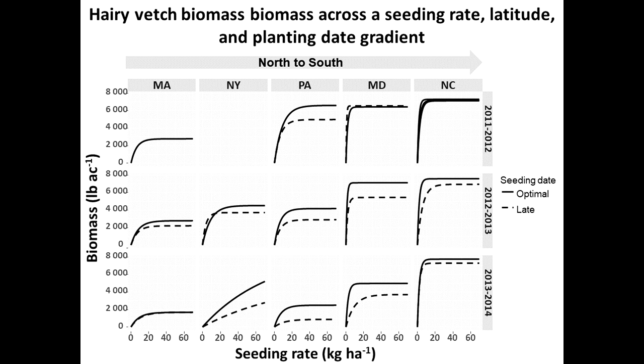Here's the figure — Massachusetts, New York, Pennsylvania, Maryland, North Carolina, across different years. This is a seeding rate gradient — hairy vetch seeding rate in pounds per acre. We typically recommend 25 to 30 pounds per acre as the common seeding rate for hairy vetch in our region.